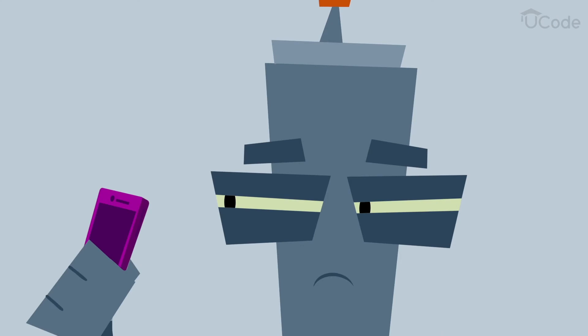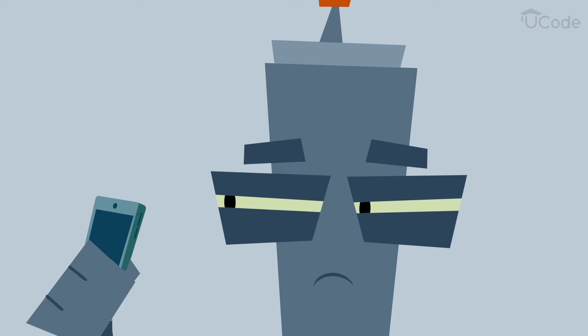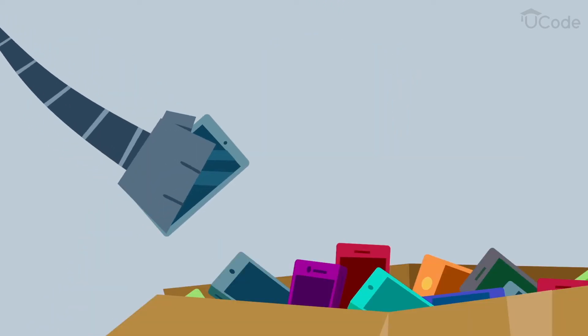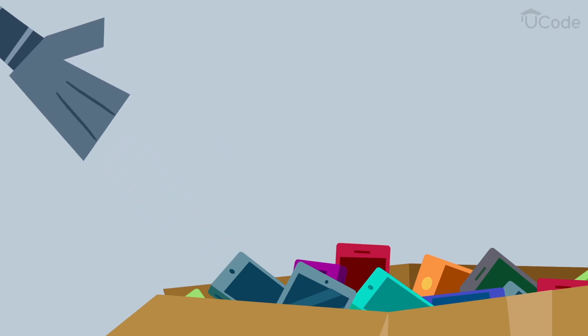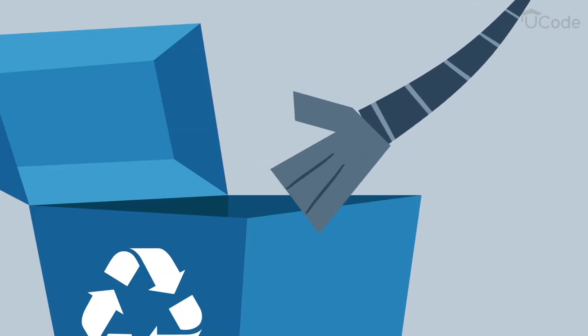In this factory, robots are testing mobile phones for quality. If the phone scores 90 or better on the quality test, then the robot places it in the box for shipping. If the phone scores less than 90, then the robot sends it to the reject pile.